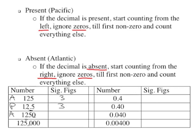Now we get our first zero. The decimal is absent. If it's absent, start counting from the right. We ignore this first zero and then count everything else. Ignore and then count one, two, three. So in this example there are three significant figures — we're ignoring that first zero.